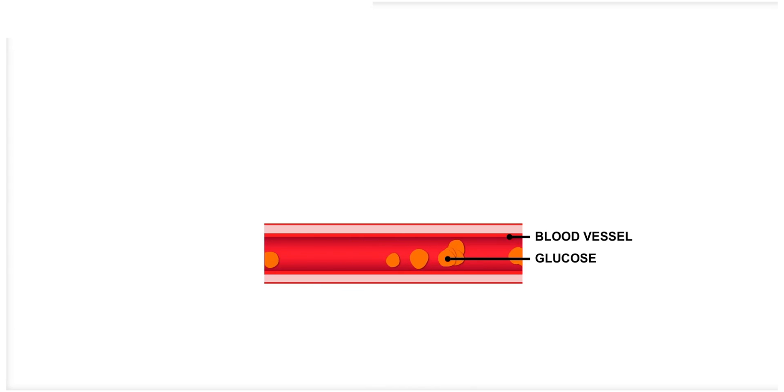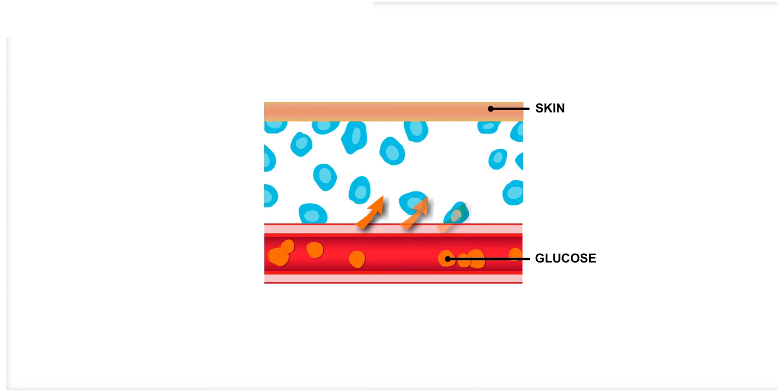Glucose is absorbed from the digestive tract into the bloodstream. Glucose then moves from the bloodstream into the fluid that surrounds all of the cells in the body. This fluid is called interstitial fluid.